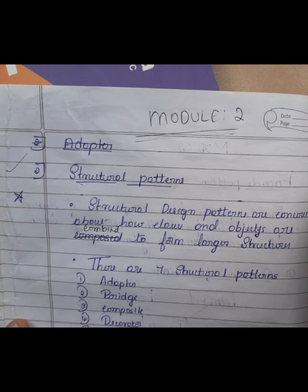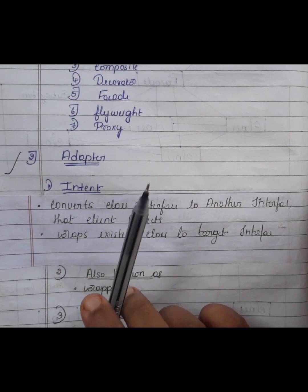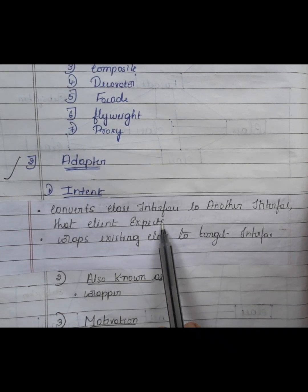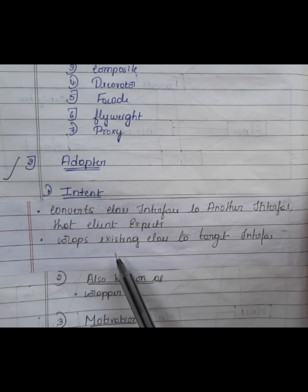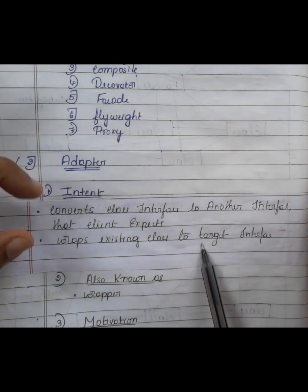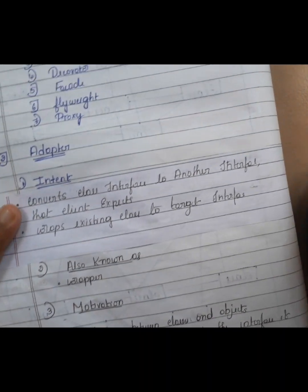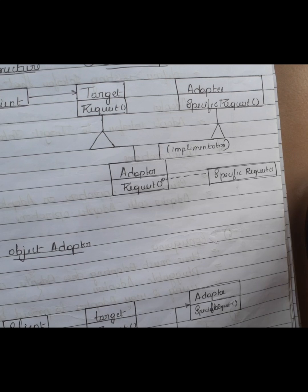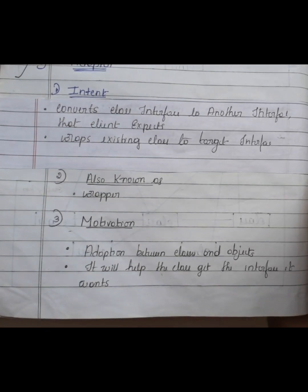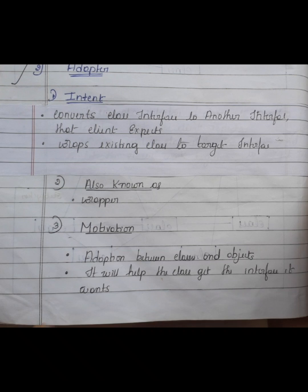For example, take the Adapter design pattern. The intent is: it converts a class interface to another interface that the client expects. The next key point is: it wraps an existing class to the target interface. Focus on these two lines. You can then write the same points under motivation, implementation, and applicability — but the wording should be different. Change the words, not the meaning.